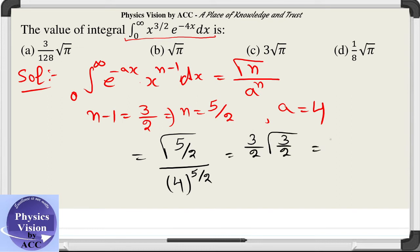Which can be further written as 3 by 2 into 1 by 2 gamma 1 by 2, and gamma 1 by 2 is under root pi. In the denominator we have under root of 4 is 2 which gives you 2 raised to the power 5 that is 32.